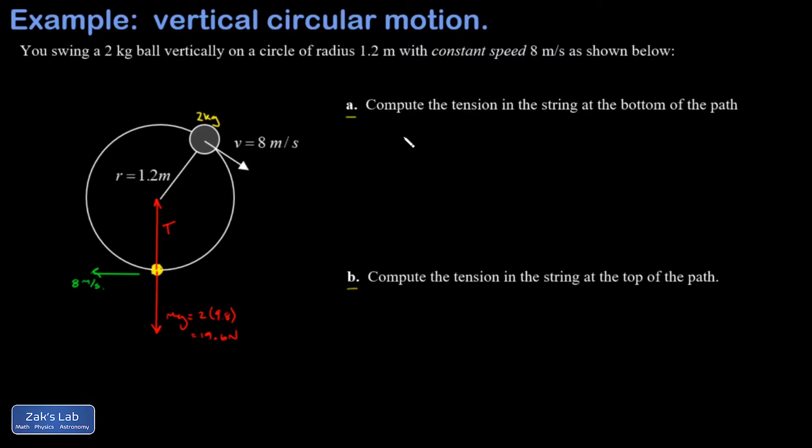So I write down Newton's second law: F net equals ma. And I'm going to use the upward direction as my positive direction because that's the direction of the actual acceleration and that just makes my life easier. So T is going to count as positive.